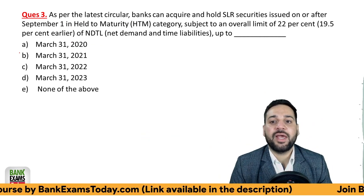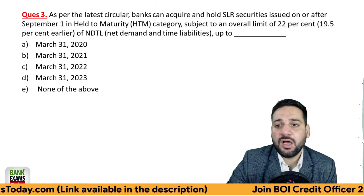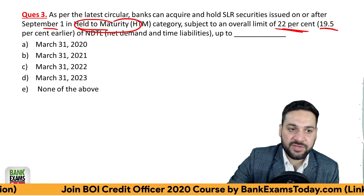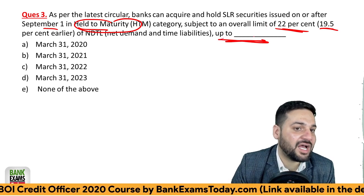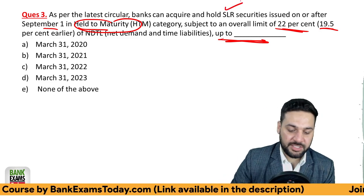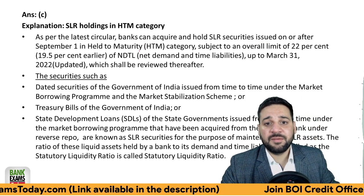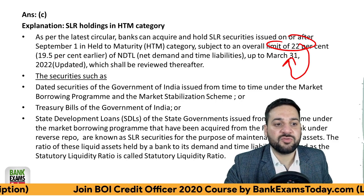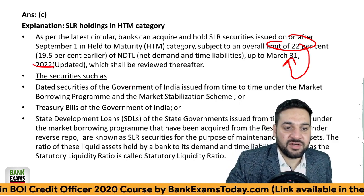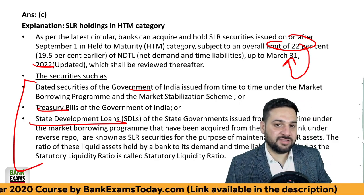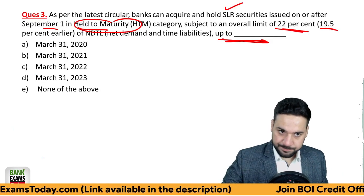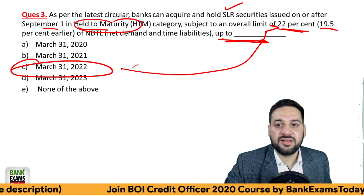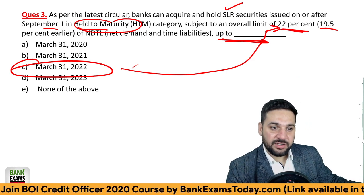Moving to question three: as per the latest RBI circular, banks can acquire and hold SLR securities issued on or after 1st September in the Held to Maturity (HTM) category, subject to an overall limit of 22 percent — earlier it was 19.5 percent. Banks are allowed to hold SLR securities in the HTM category at this 22 percent limit till 31st March 2022. SLR securities include dated government securities, T-bills, and state development loans. The correct answer is 31st March 2022.